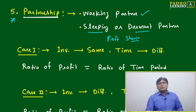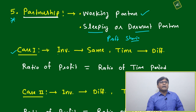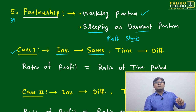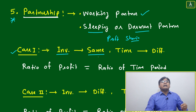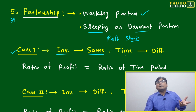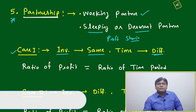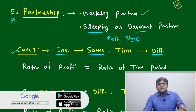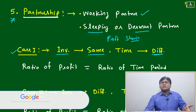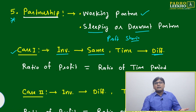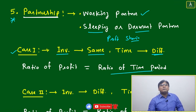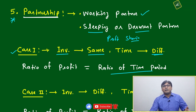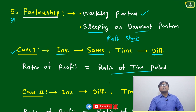We will deal with two or three cases. Case one: if the investment by all partners is the same. Suppose three partners invested 10 lakh, 10 lakh, and 10 lakh, but for different time periods — one kept money for three years, another for two years, another for five years. Then the ratio of profit will be equal to the ratio of time periods — just take the ratio of how long each partner kept their investment.